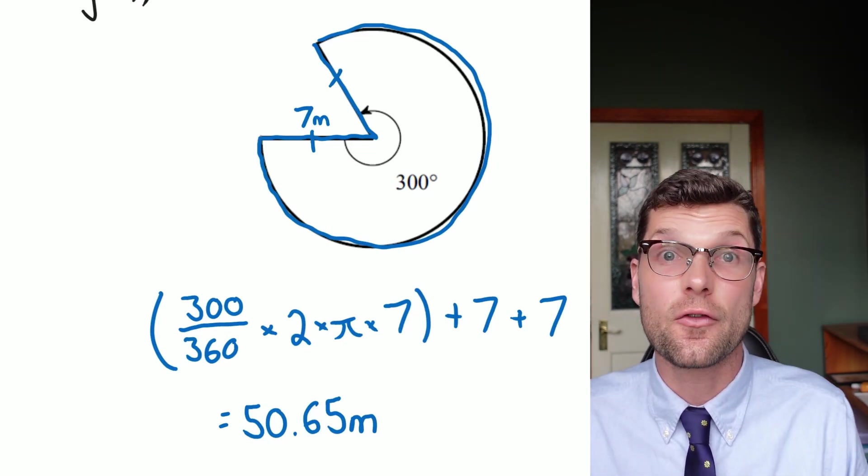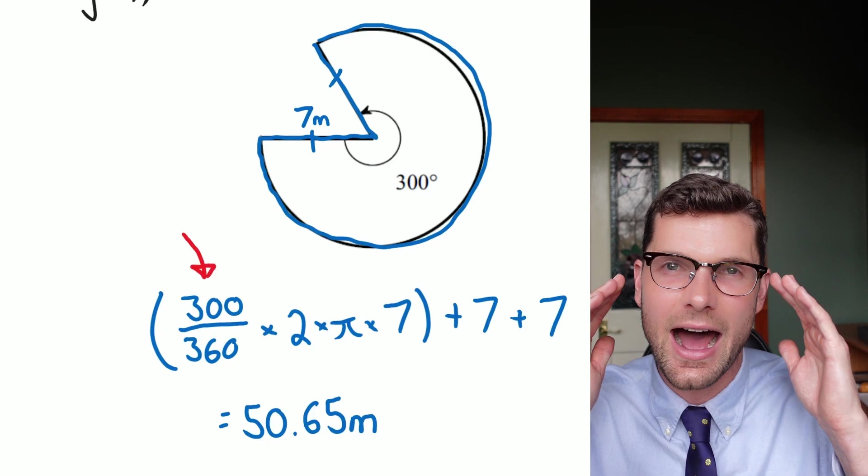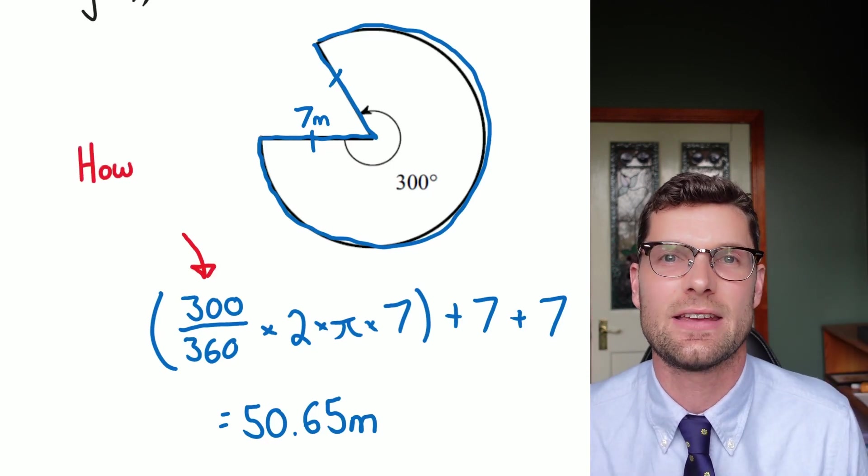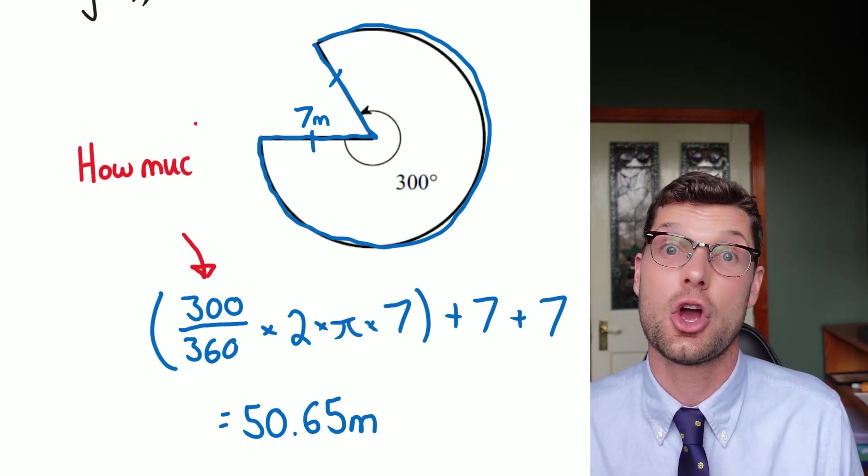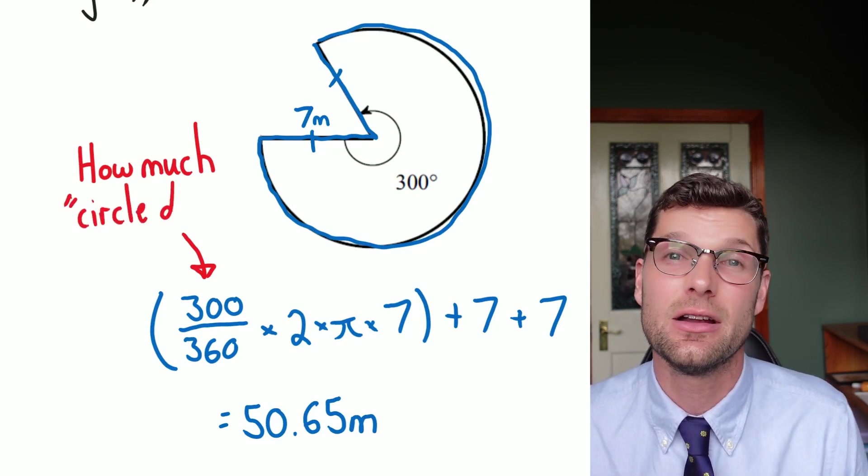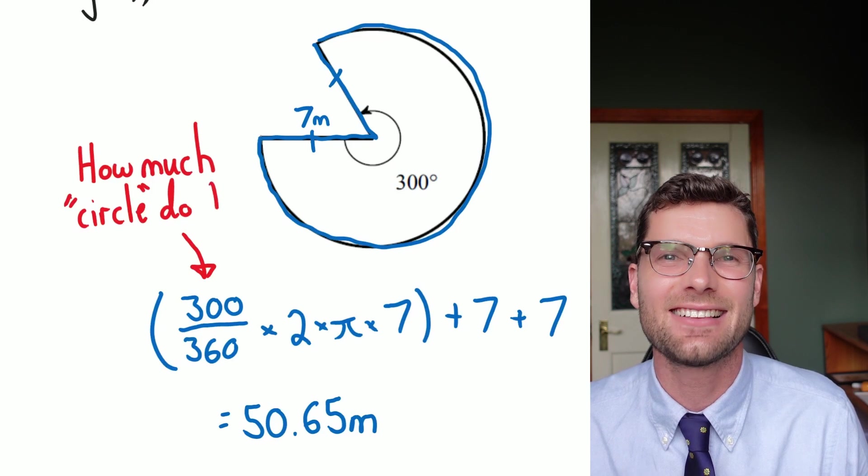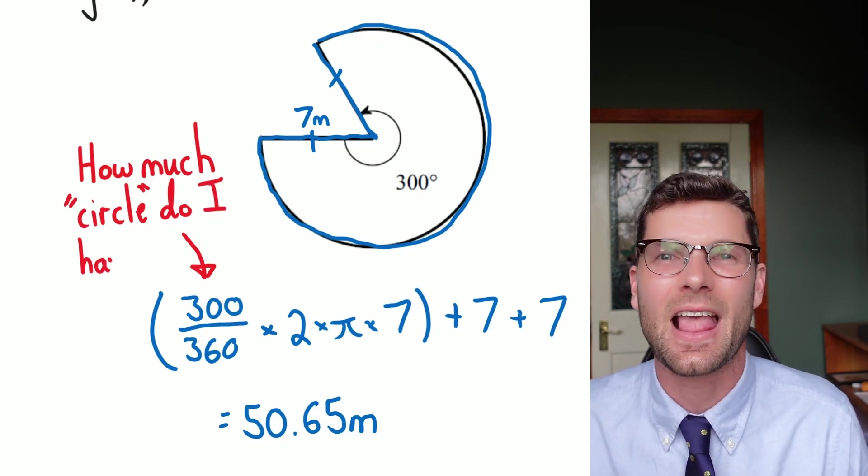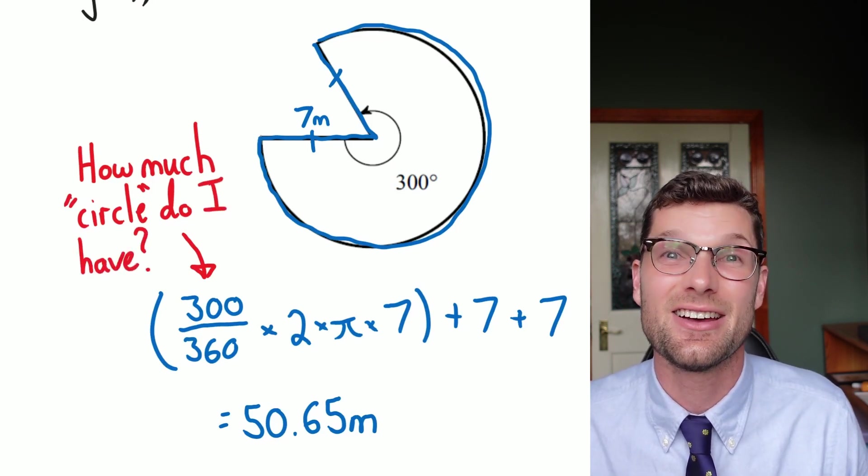So for this, the only thing I want you to ask yourself before you dive into one of these questions is how much of the circle do I actually have? Once you can work that out from the degrees in the middle, the rest of it is exactly the same as what we've done before. I hope you guys found this helpful, and I'll see you later.